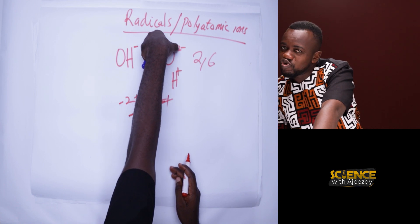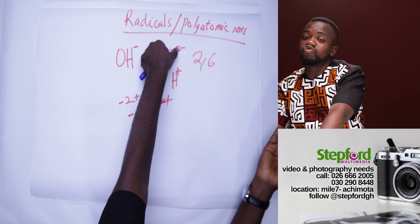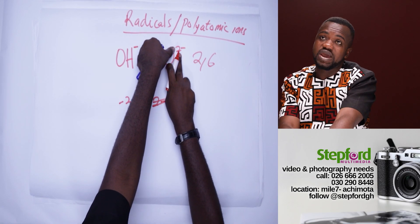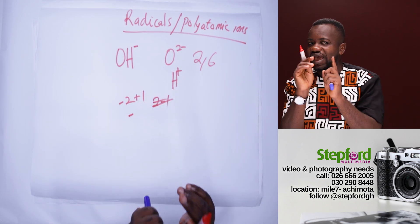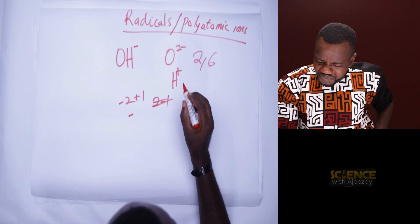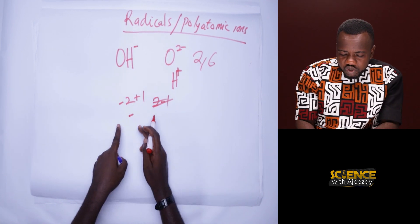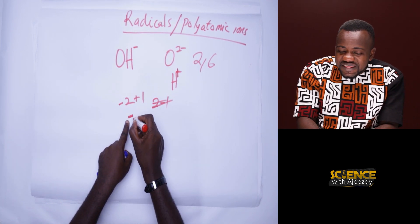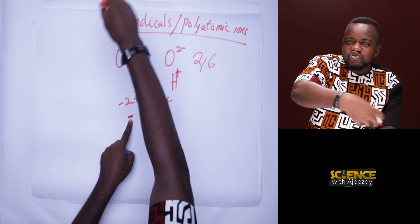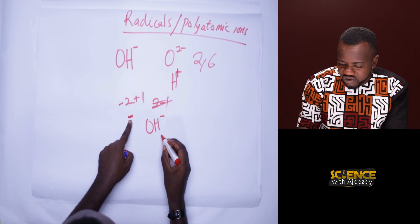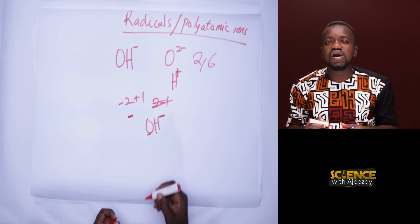Oxygen is two minus because of its electron configuration of two and six — it is not stable, so it accepts two electrons. Hydrogen is group one with a charge of plus one. When you add the charges together, negative two plus one gives a resulting charge of negative one. So OH minus possesses this charge of minus one and is called hydroxyl.